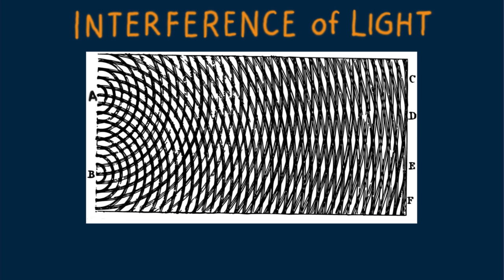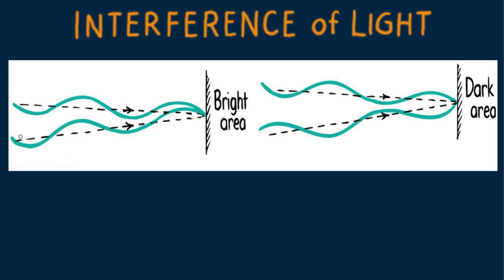Bright spots of light formed when crests of light waves from both holes arrived in phase, that is crest to crest and trough to trough. Dark spots formed when a crest from one and a trough from another arrived together.